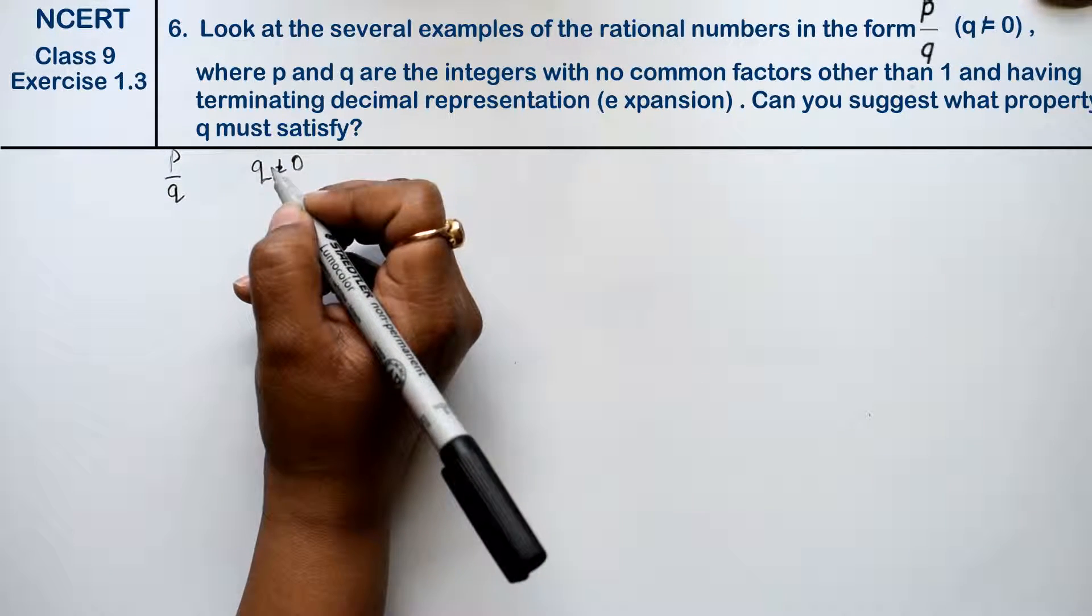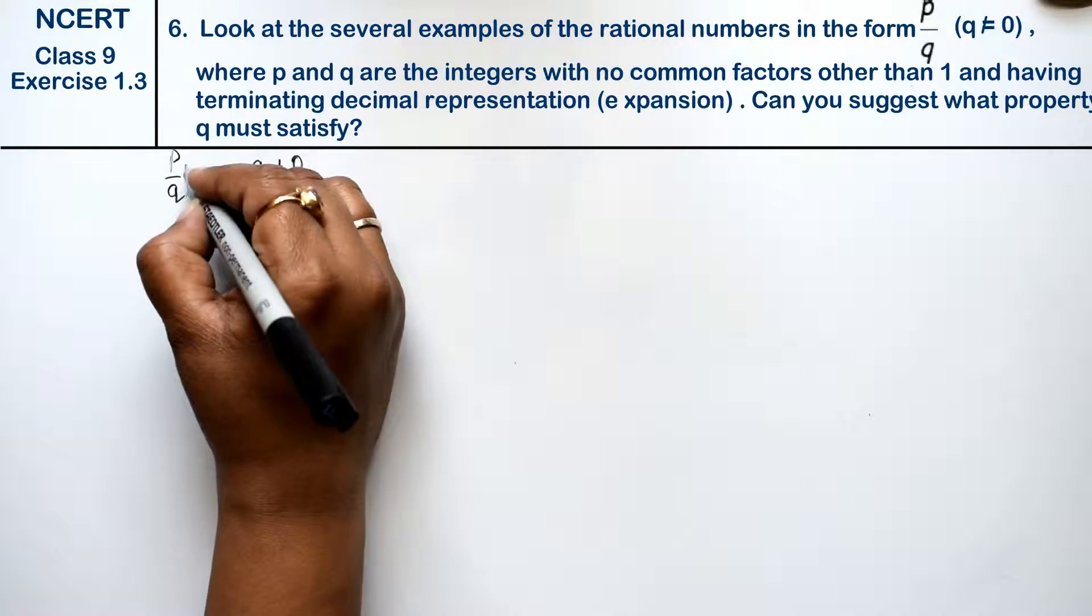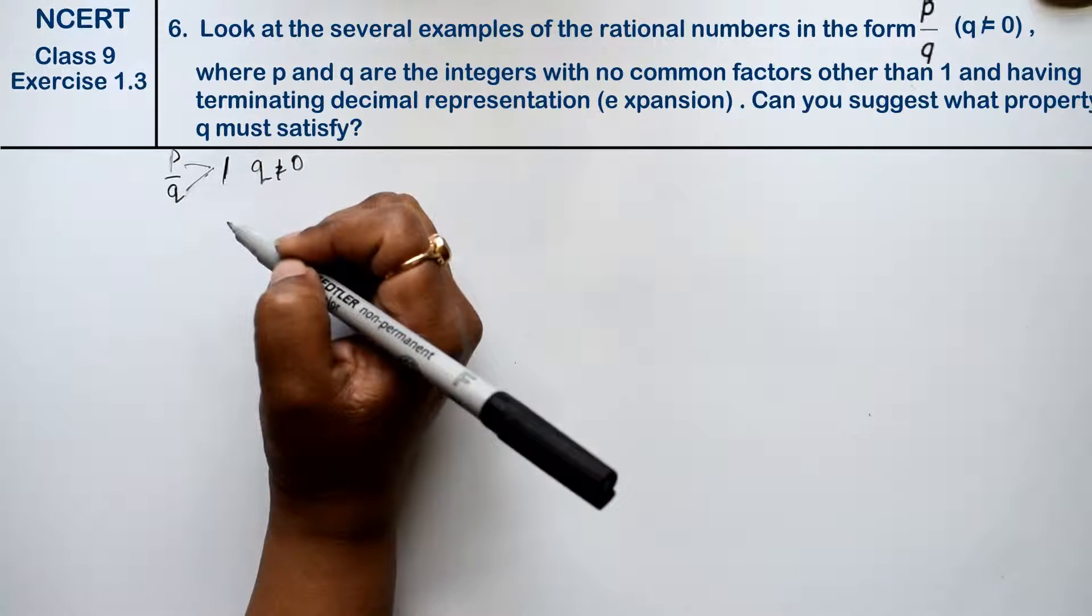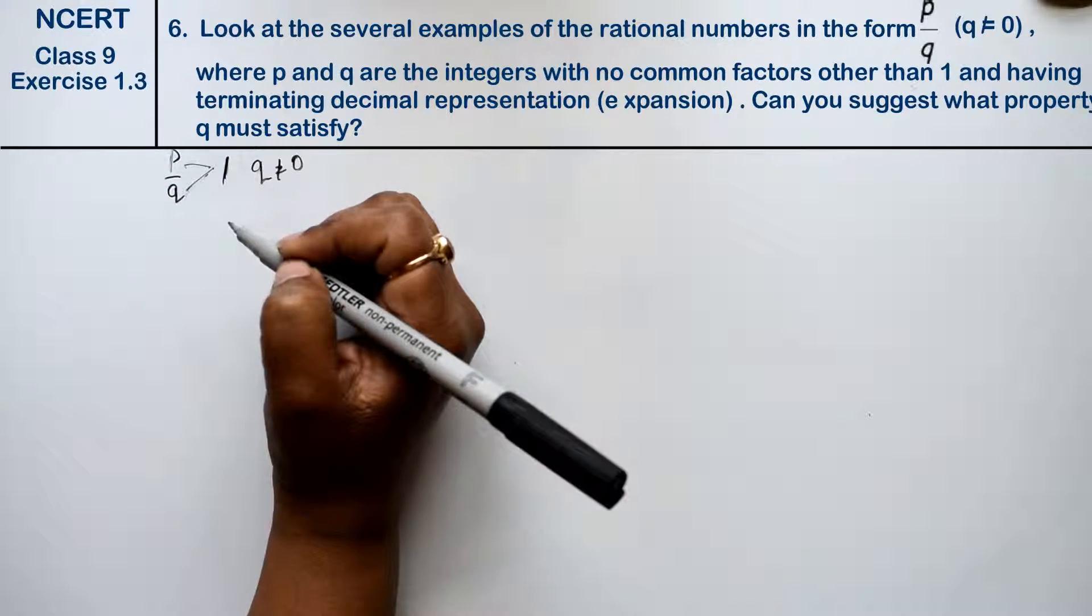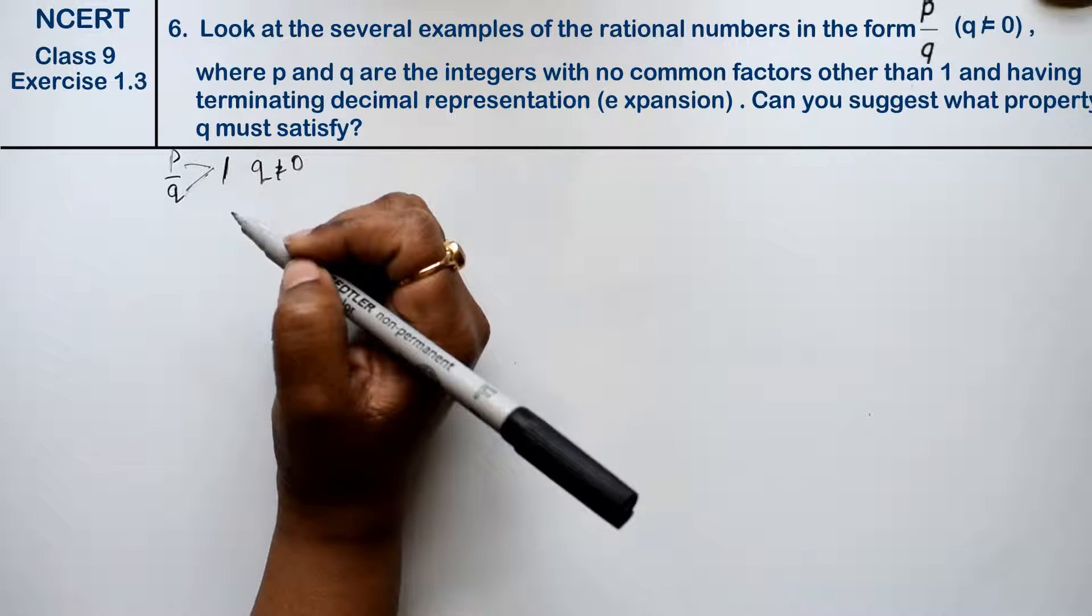Where p and q are the integers with no common factor other than 1. In both these two factors, there is no common factor which is above 1, and having a terminating decimal representation expansion. Can you guess what property q must satisfy?